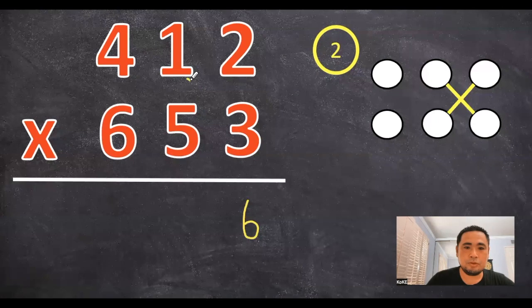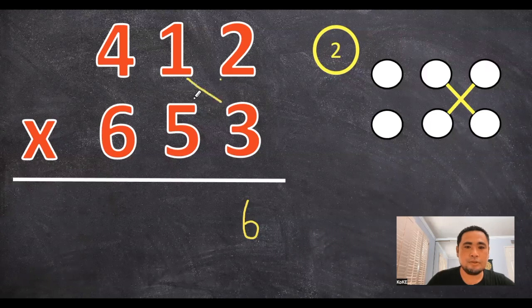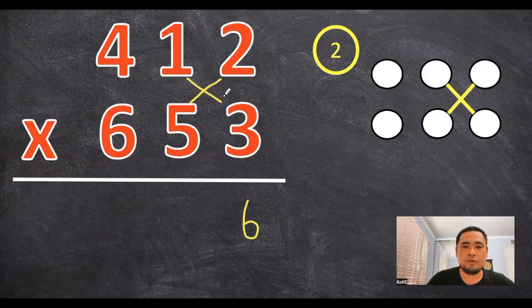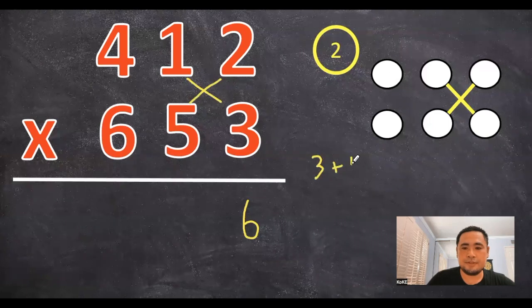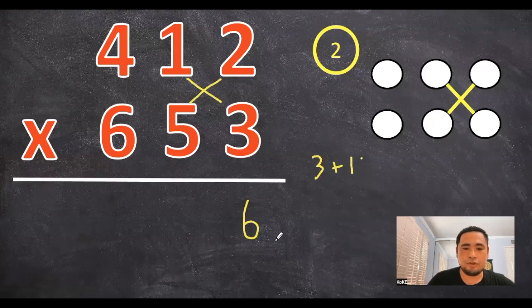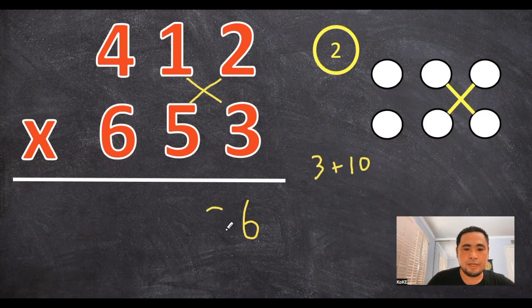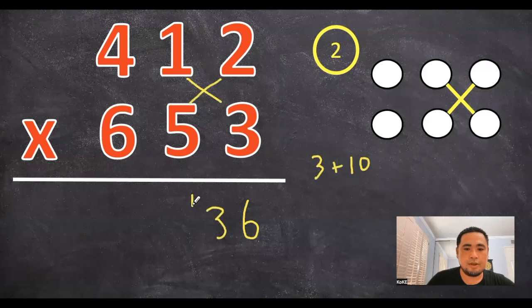The second step is to multiply these two cross numbers right here and add them together, so 1 times 3 gives us 3, and 2 times 5 gives us 10, for a total of 13, and I'm going to write the 3 next to the 6, and then carry over the 1.